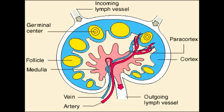Lymph node follicle. What is lymph node follicle? Lymph node follicle is an area of the lymph node that is located in the outer cortex. It's the site of B cell localization and proliferation. The two types of follicles include primary follicles and secondary follicles. Primary follicles are dense and dormant, so there's not a whole lot of activity in them. But secondary follicles have pale germinal centers and are active.